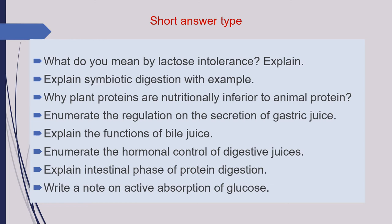Next is: enumerate the regulation of secretion of gastric juice. Next question is: explain the functions of bile juice. Next is: enumerate the hormonal control of digestive juices. Next question is: explain the intestinal phase of protein digestion. As these are short answer type questions, you have to answer these in a single paragraph.